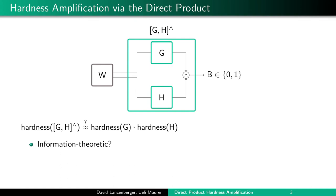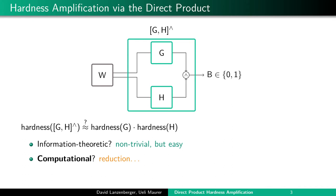In an information-theoretic setting, this is not trivial but also not too difficult to prove — it holds in a perfect sense with equality for essentially any games G and H. In this work we are considering the more difficult computational setting, where one would basically need to argue via a reduction — reducing the winner W to a winner for just G and H. In this setting, the hardness multiplication is only true in an approximate sense, not with equality.